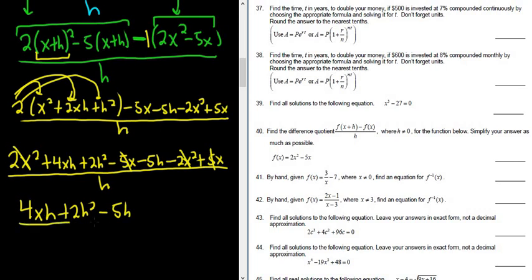So now you pull out an h, so h(). So it looks like we need a 4x, because when we multiply these we get 4xh, plus looks like we need a 2h, and here looks like we need a minus 5, and it's all over h. The h's cancel and so